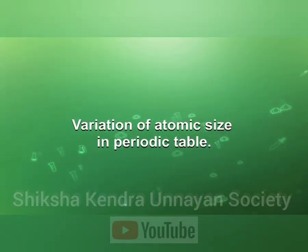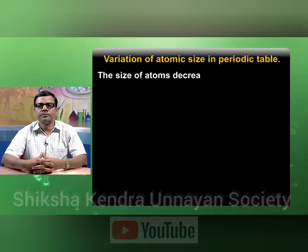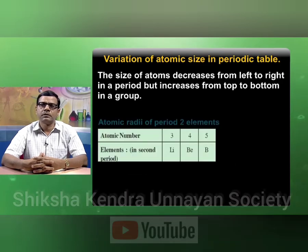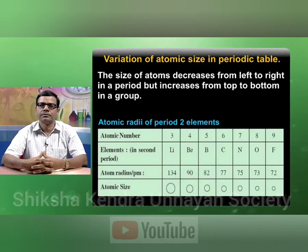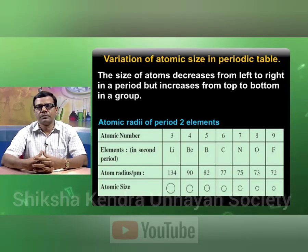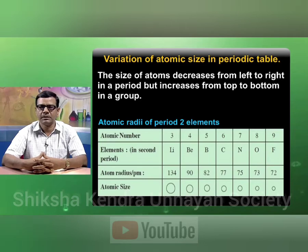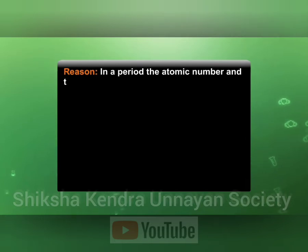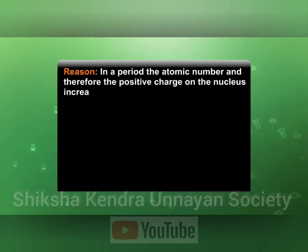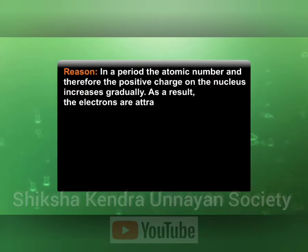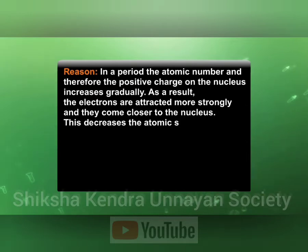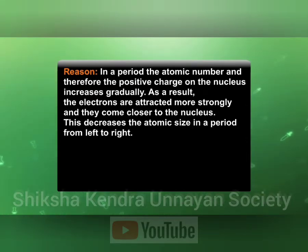Variation of atomic size in the periodic table: the size of an atom decreases from left to right in periods but increases from top to bottom in a group. This table shows the variation of atomic size from left to right — we can see that the size of an element in a particular period decreases from left to right. Reason: in a period, the atomic number and therefore the positive charge of the nucleus increases gradually. As a result, the electrons are attracted more strongly and come closer to the nucleus, which decreases the atomic size in a period from left to right.